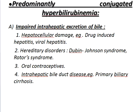Impaired intra-hepatic excretion of bile. We are discussing the causes. Number three: oral contraceptives. Number four: intra-hepatic bile duct disease, for example, primary biliary cirrhosis.